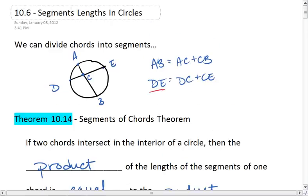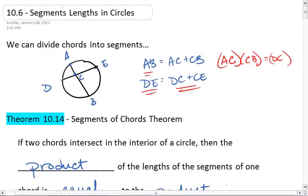Basically, if you break these chords into their two segments, then we know that AC times CB equals DC times CE.